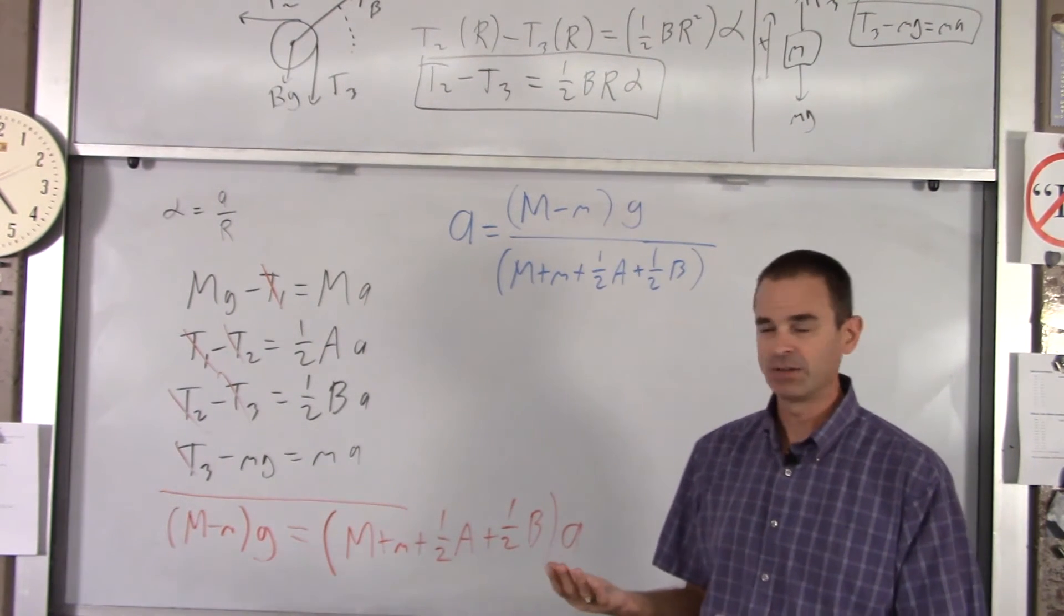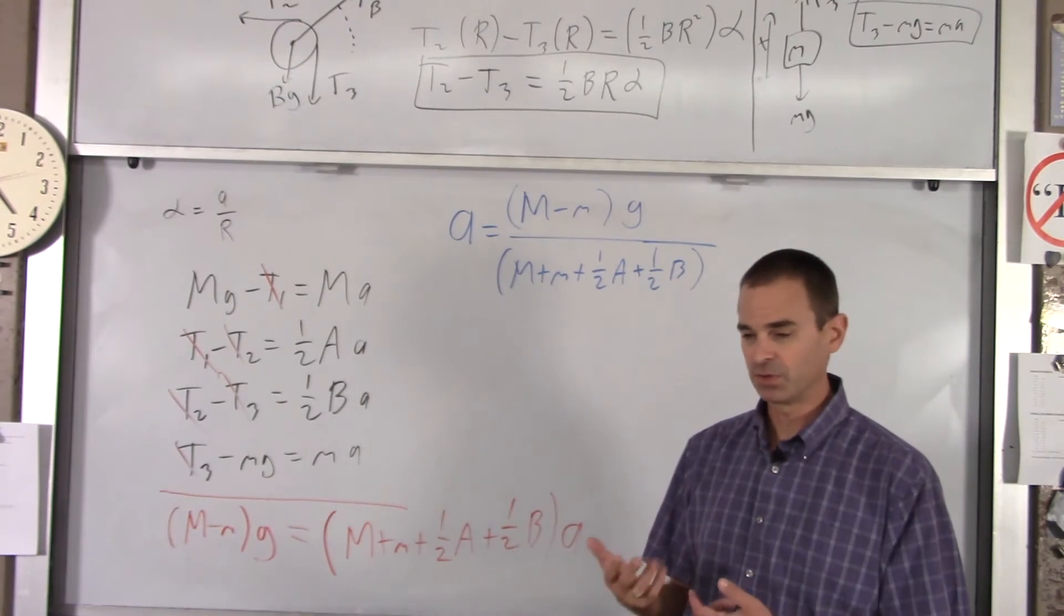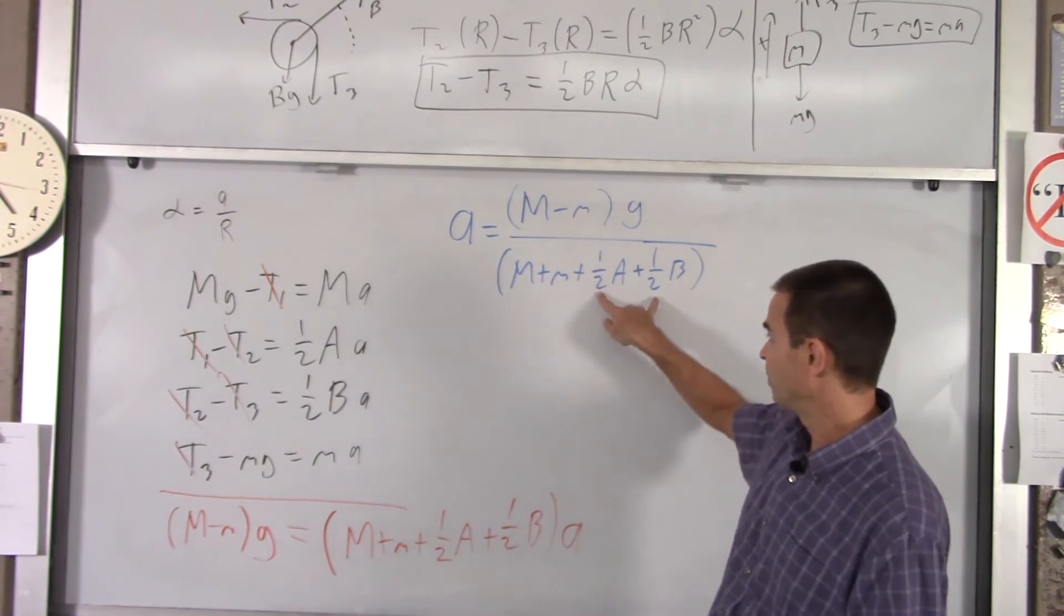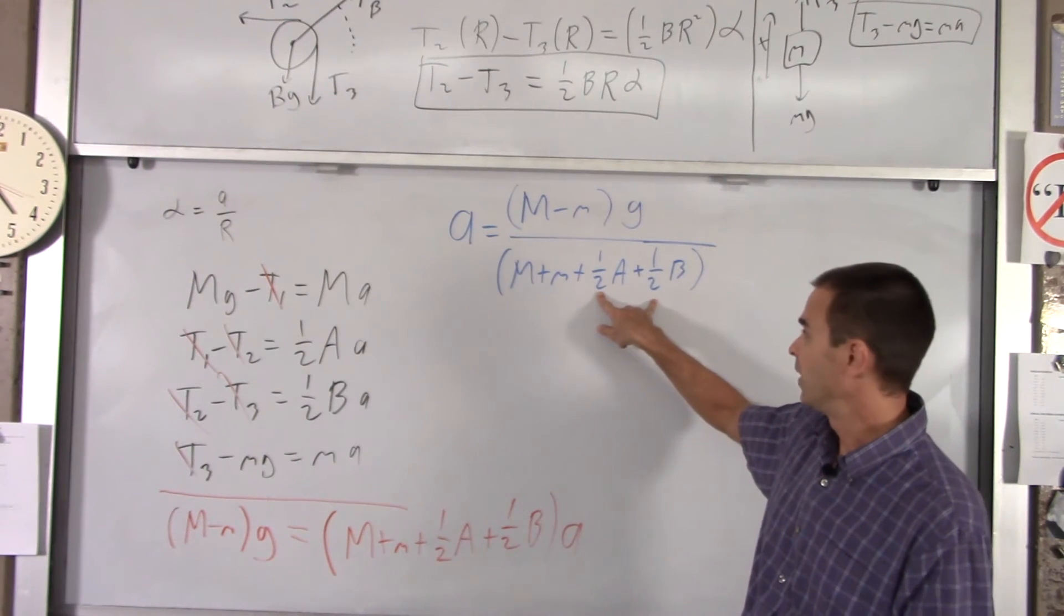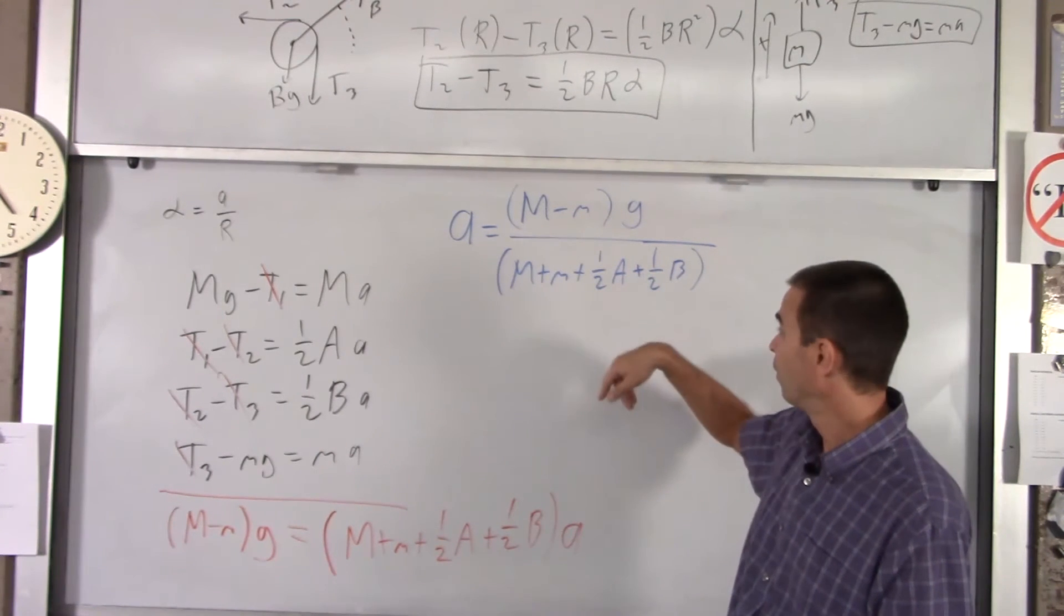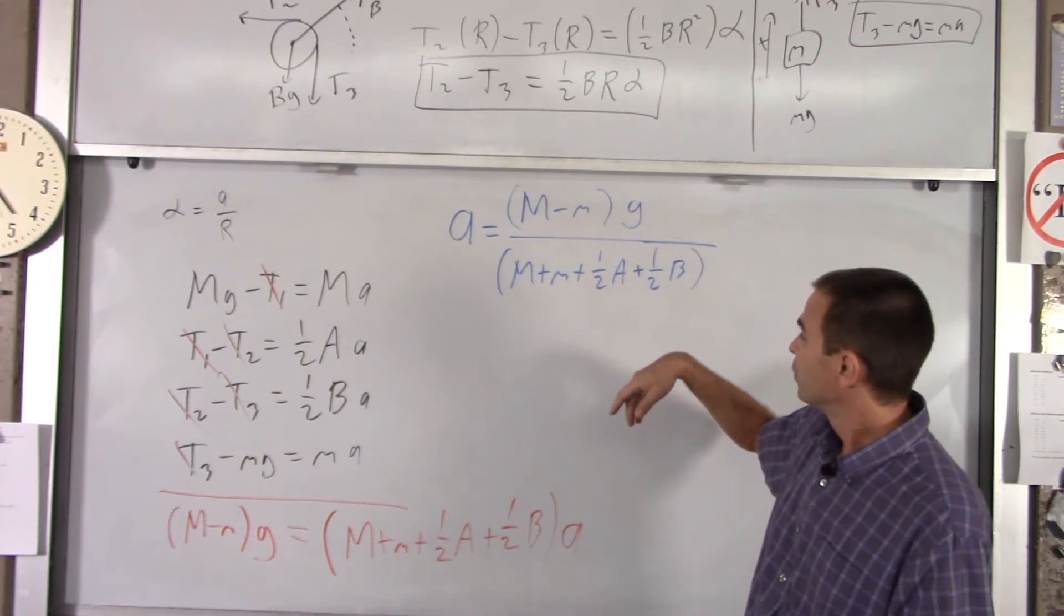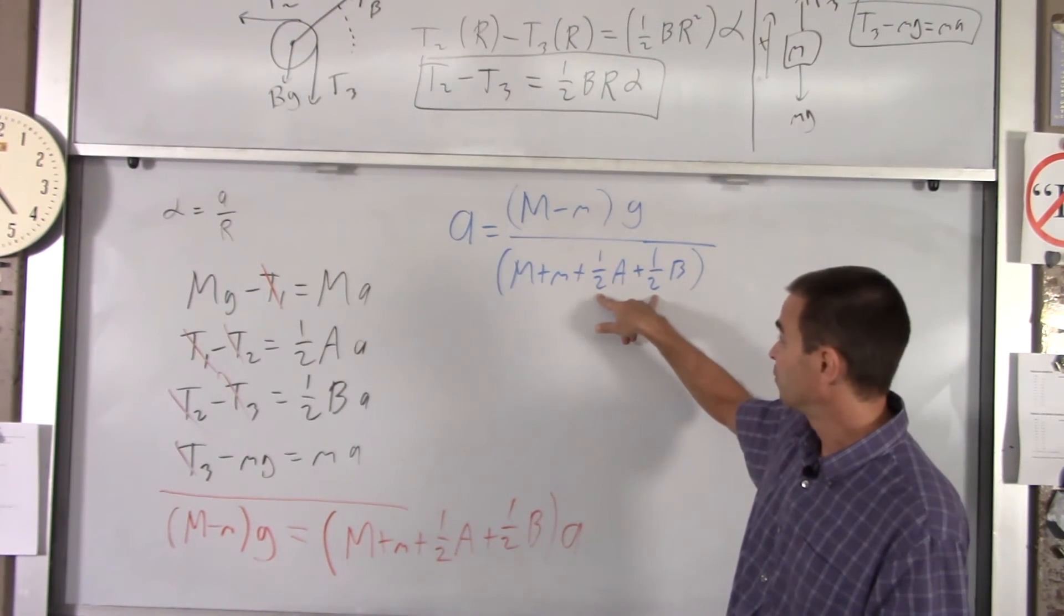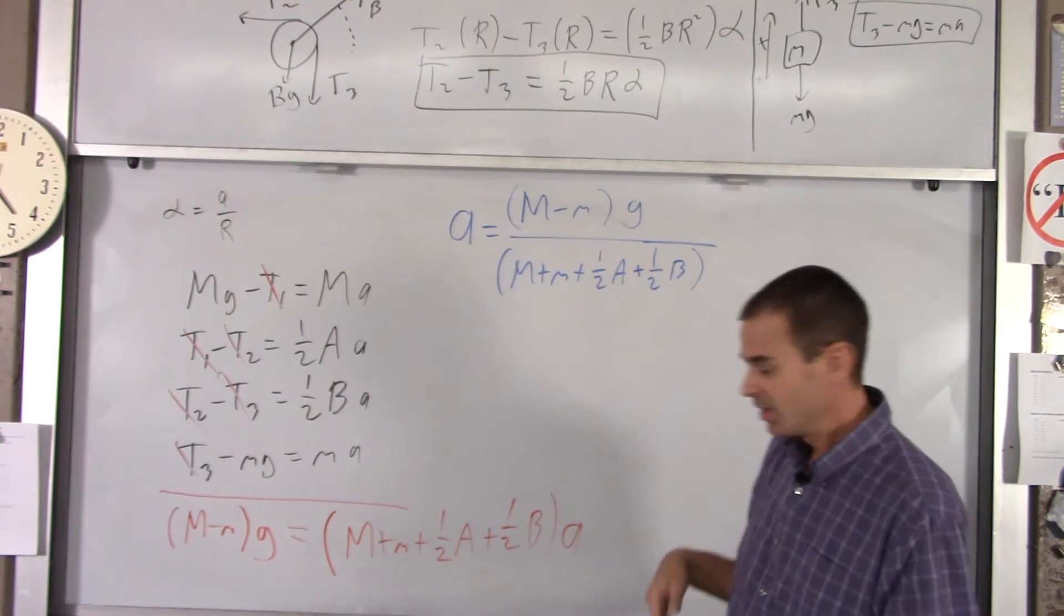Let's say instead of solid disks, what if they had been hollow hoops? Well, the moment of inertia of a hoop is just m r squared. So these would no longer be a half, they'd be one. If they were a solid sphere, then they would be one third. So depending on what kind of shape your pulleys are, that changes what these fractions are.